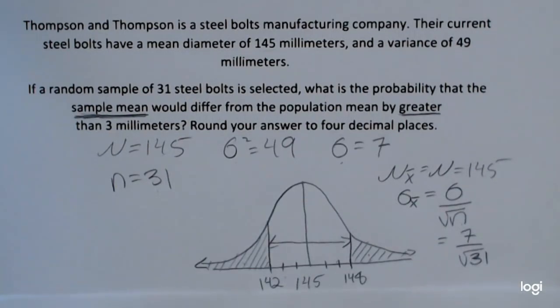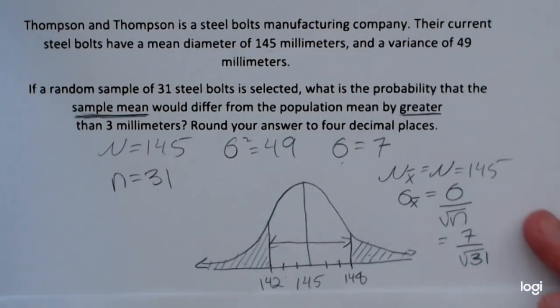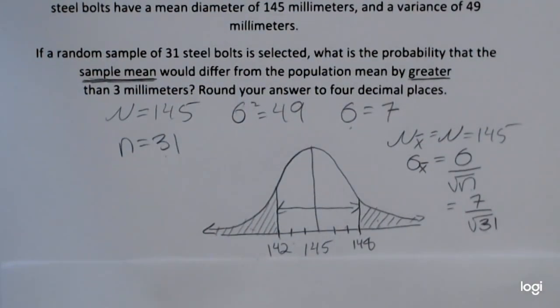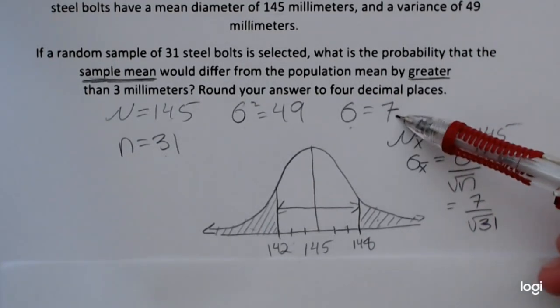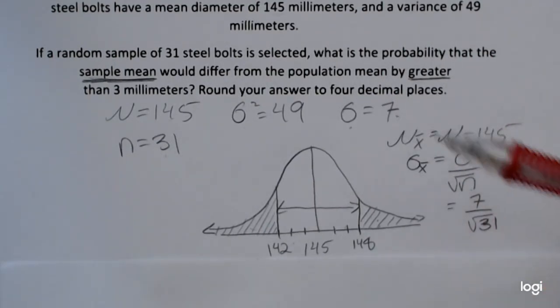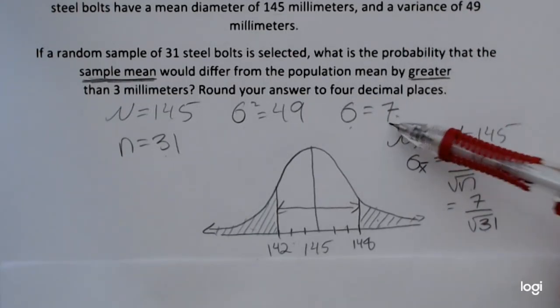The Central Limit Theorem says that the sample means will be normally distributed if the population standard deviation is known. So we are assuming that the population standard deviation is 7.